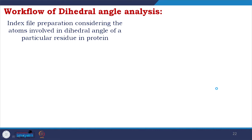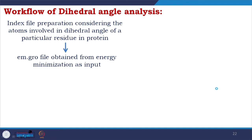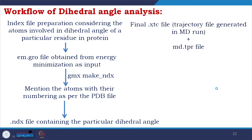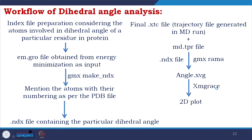For the dihedral angle workflow: prepare an index file considering the atoms involved in the dihedral angle of a particular residue, because for hydrogen bonds and dihedral analysis you have to specify the particular residues. Use the em.gro file from energy minimization as input, apply 'gmx make_ndx' mentioning the atoms with numbering as per the PDB file, and get the .ndx file containing the particular dihedral angle. Then take the final .xtc file and .tpr file, apply 'gmx rama' with the .ndx file, get angle.xvg, apply xmgrace, and get the 2D plot.